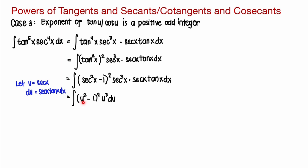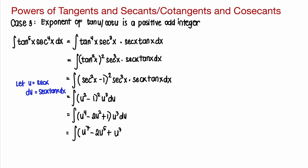Here, secant squared x corresponds to u squared minus 1 quantity squared, secant cubed x is u cubed, and secant x tangent x dx equals du. Expanding the binomial gives u to the power of 4 minus 2u squared plus 1, and distributing through u cubed gives u to the power of 7 minus 2u to the power of 5 plus u cubed du. Integrating each term gives u to the power of 8 over 8 minus 2u to the power of 6 over 6 plus u to the power of 4 over 4 plus C.